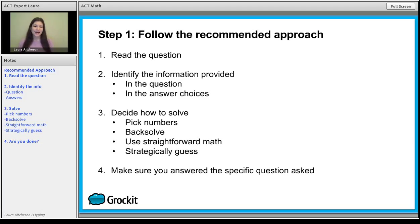One thing to keep in mind is that picking numbers and backsolving, you can use those on over half of all the questions in the section. So 31 or more of those 60 questions can be solved using picking numbers or backsolving. You want to have those techniques down so that you can increase your efficiency and your accuracy. You're going to be moving through the section more quickly, and you're going to be getting more questions right.